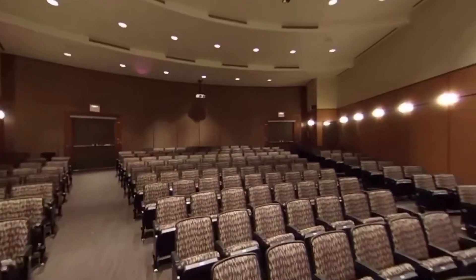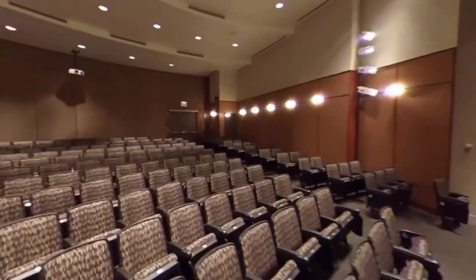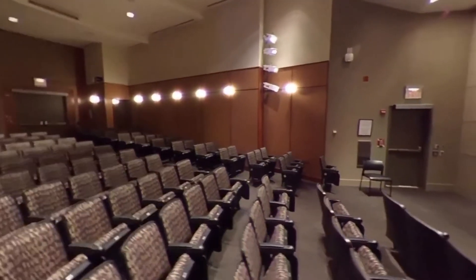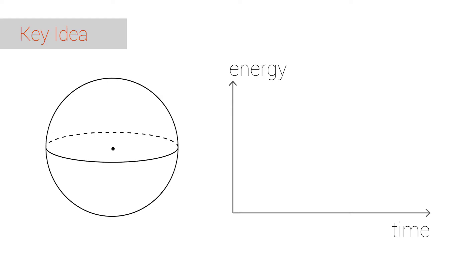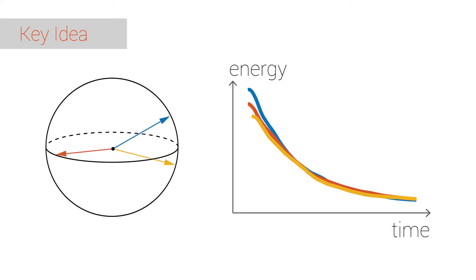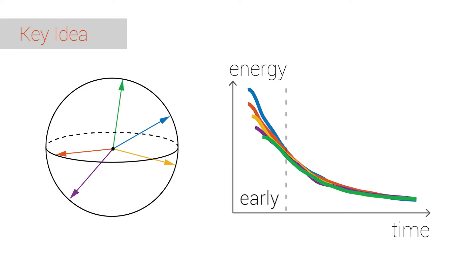Our method leverages an important property of spatial room impulse responses. Shown here are directional impulse responses measured in a real room along different directions. While the energy distribution changes drastically in the early part, the late tail is mostly independent of direction.